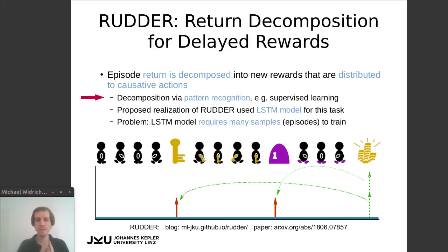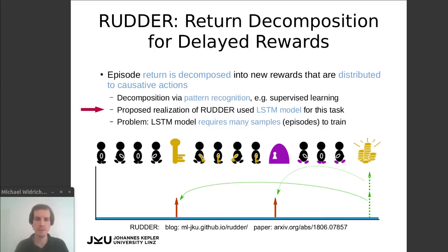RUDDER does not need to predict the future within an episode like typical reinforcement learning methods need to do. In the original RUDDER publication, an LSTM model was proposed to realize this return decomposition and reward redistribution. However, an LSTM model requires a lot of episodes to train and is also quite difficult to adjust, which is a problem for RUDDER in practical applications.